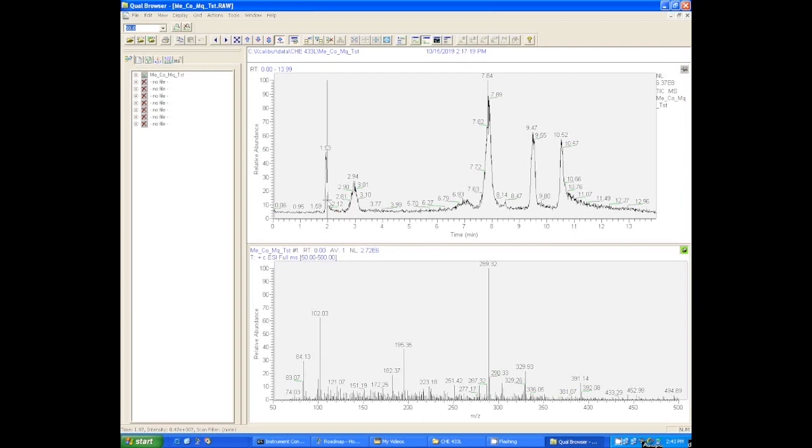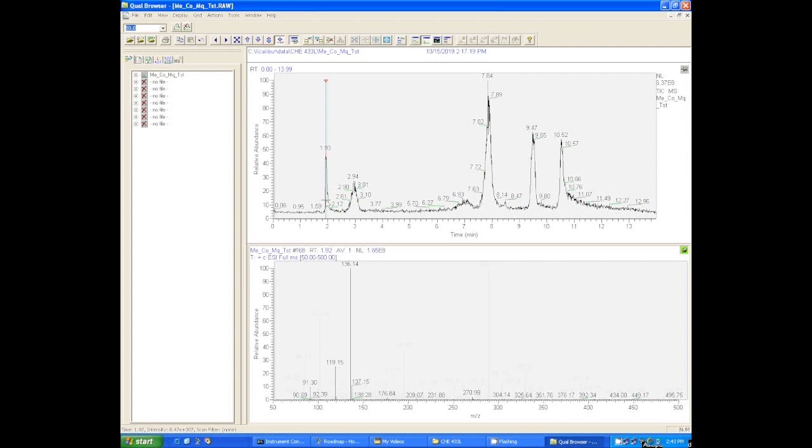What that means is that when we click on the chromatogram here, wherever we click on the chromatogram, the mass spectrum for that point in time pops up in the window on the bottom. So you can see we're clicking here and here and we're looking at all these different mass spectra at different points in time. You can also click on one point here. I'm pushing the sideways arrow and that will scroll through the mass spectra near that point that I clicked.